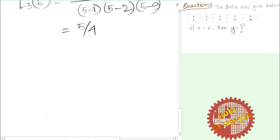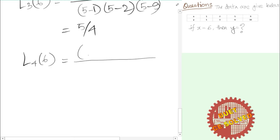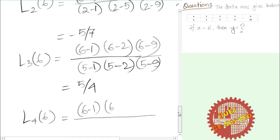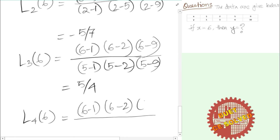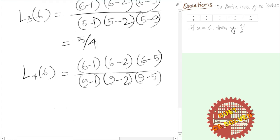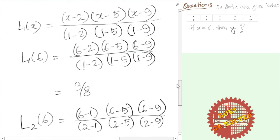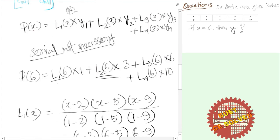Finally, L4(6): numerator is (6-1)(6-2)(6-5), and the denominator substitutes x4 = 9, giving (9-1)(9-2)(9-5). This equals 5/56. We now have all four Lagrange function values: L1(6) = 3/8, L2(6) = -5/7, L3(6) = 5/4, and L4(6) = 5/56.